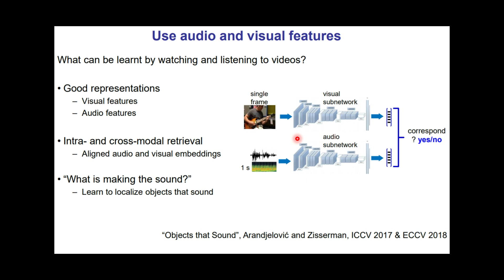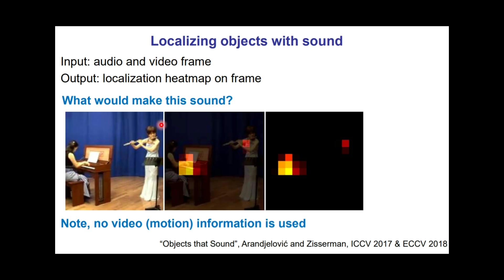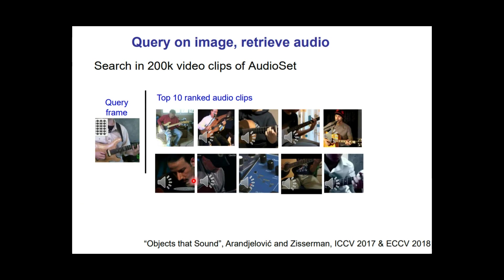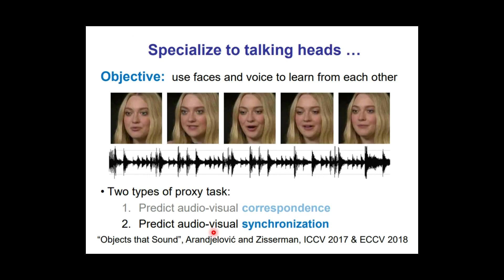Using this correspondence, the model learns good visual and audio features. One interesting application is localizing objects that make sound — given audio and a video frame, the output localizes which instrument is playing. If the image shows a keyboard and the sound is of a keyboard, then the keyboard gets localized. Another application is image-to-audio retrieval: give an image of a guy playing guitar and it retrieves guitar audio clips. Another task is to predict audio-visual sync using faces and voice — whether the audio and the lip movements of the faces sync or not.